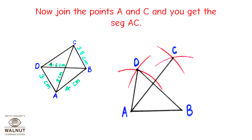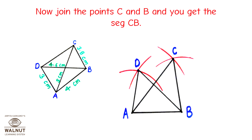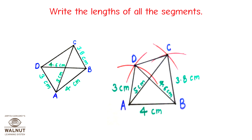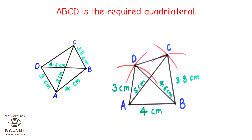Now join the points A and C to get segment AC. Now join the points C and B to get segment CB. Now join the points C and D to get segment CD. Write the lengths of all the segments. ABCD is the required quadrilateral.